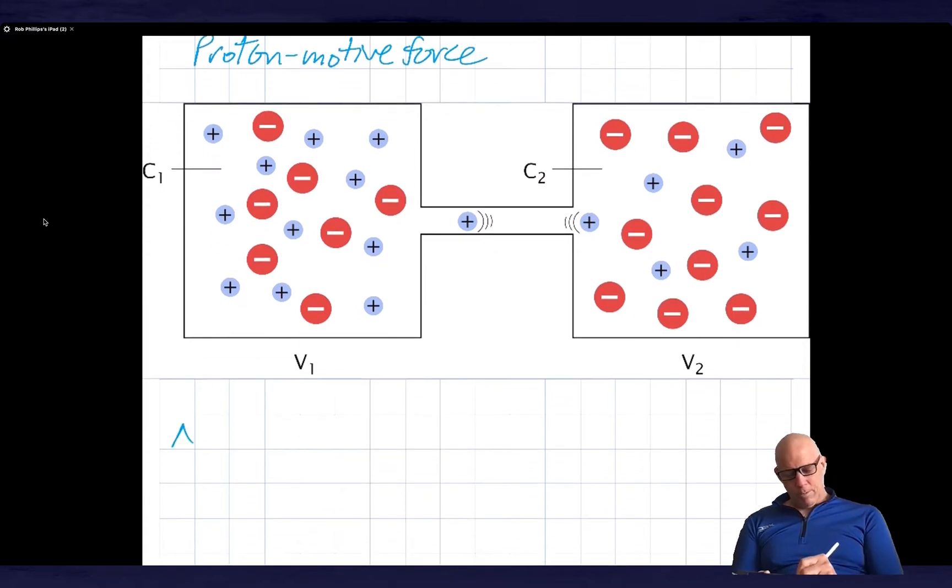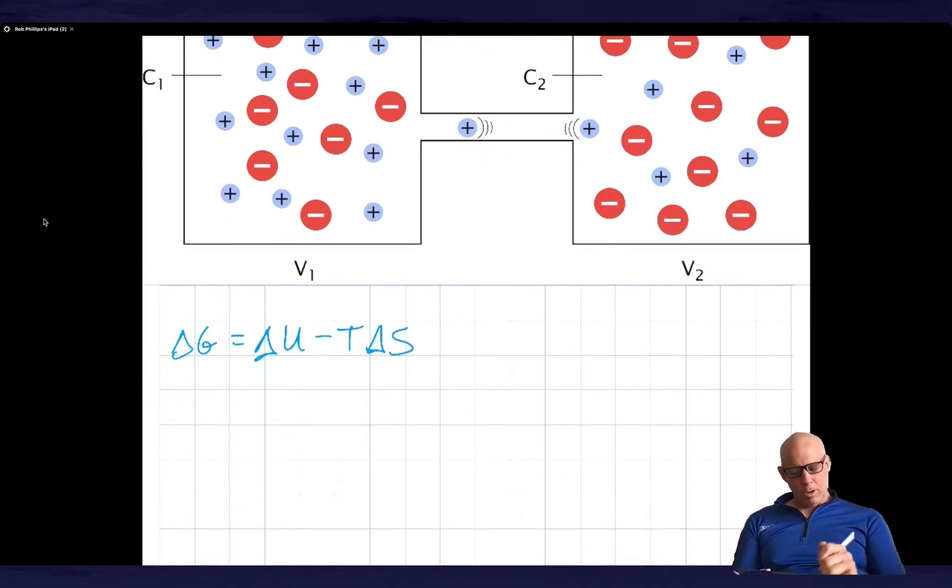So if I have a delta G total that's going to be equal to delta U minus T delta S, and from earlier we recall that this whole piece is equal to KBT log of C1 over C2.